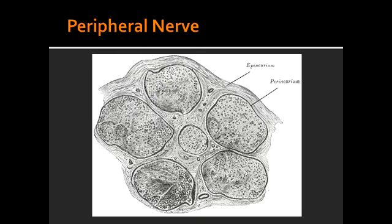What is perineurium? Perineurium is the permeability barrier that surrounds a fascicle of nerve fibers. So first, individual nerve fibers are wrapped by endoneurium. Then a group of these nerve fibers that have already been wrapped by endoneurium gets bundled up by being wrapped by a perineurium.